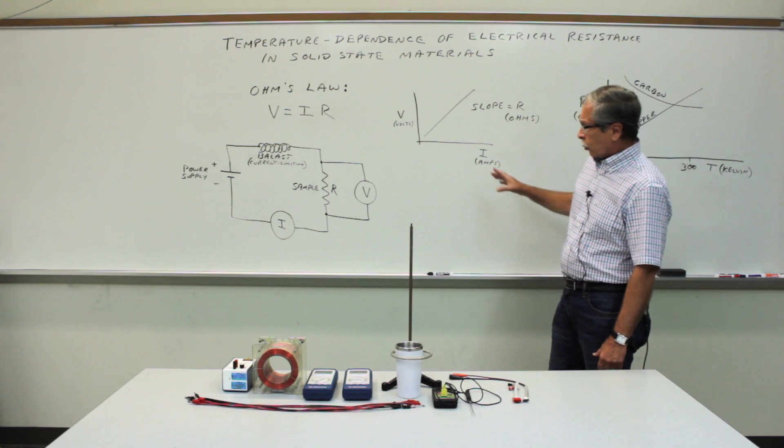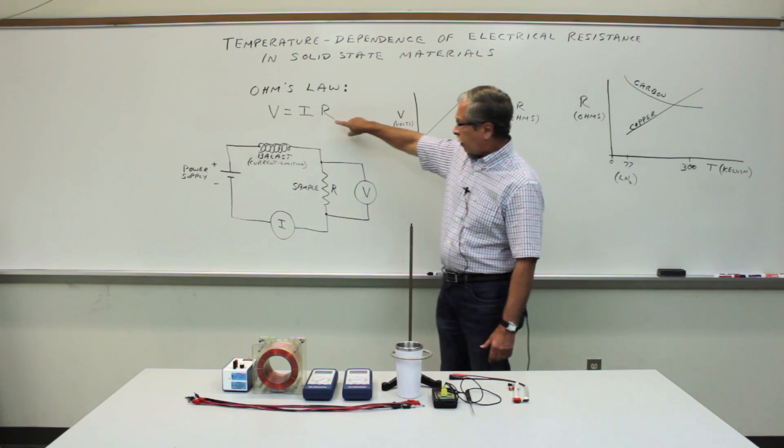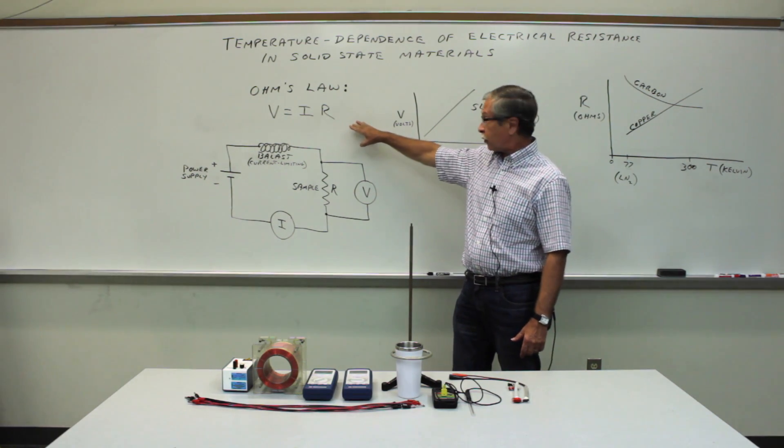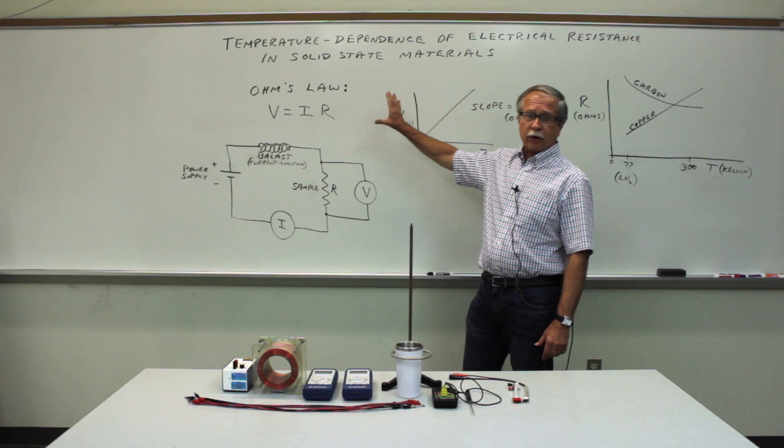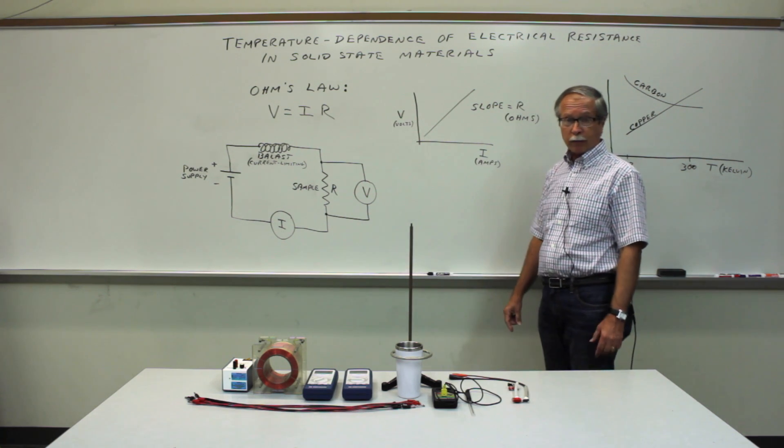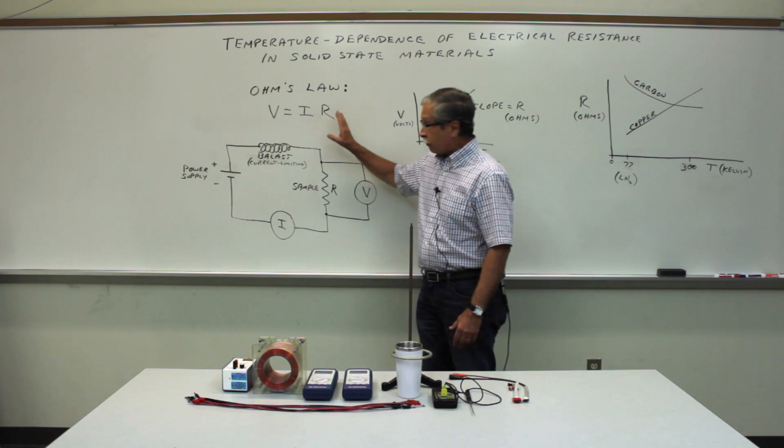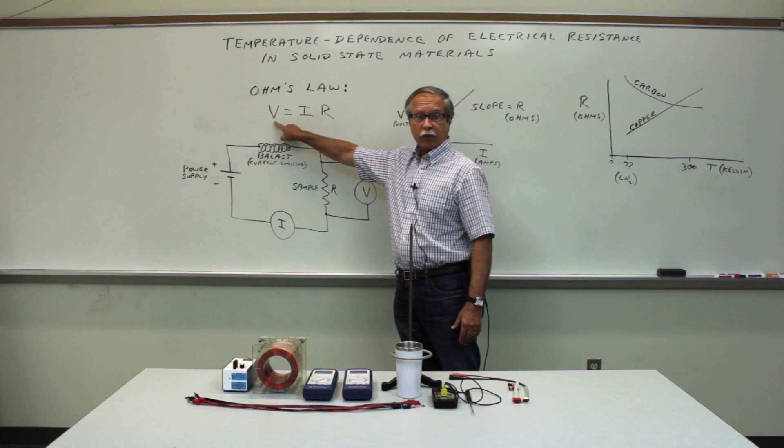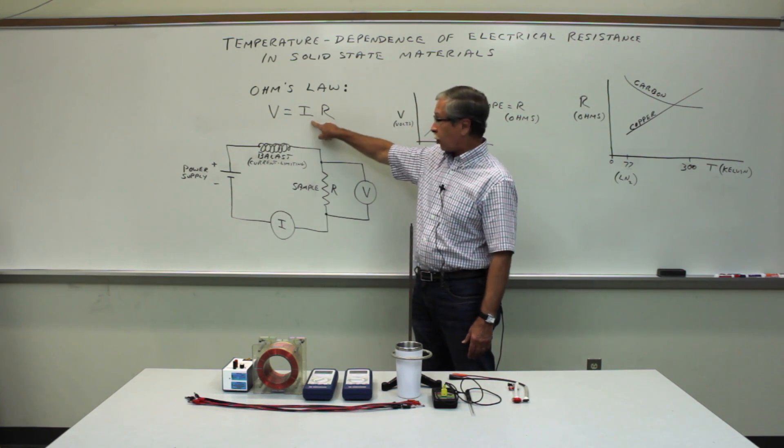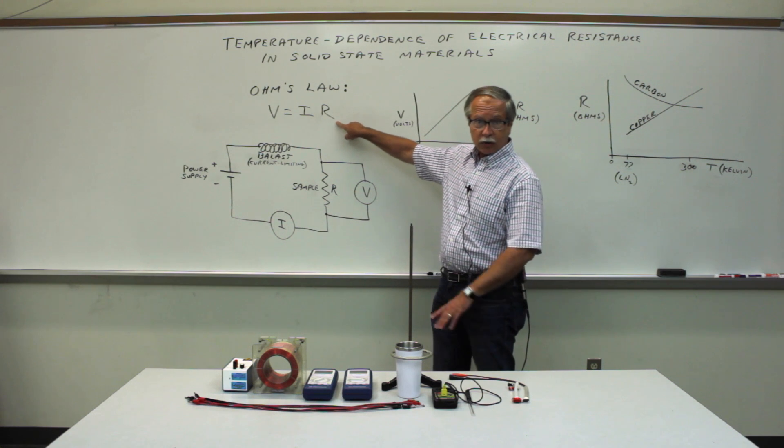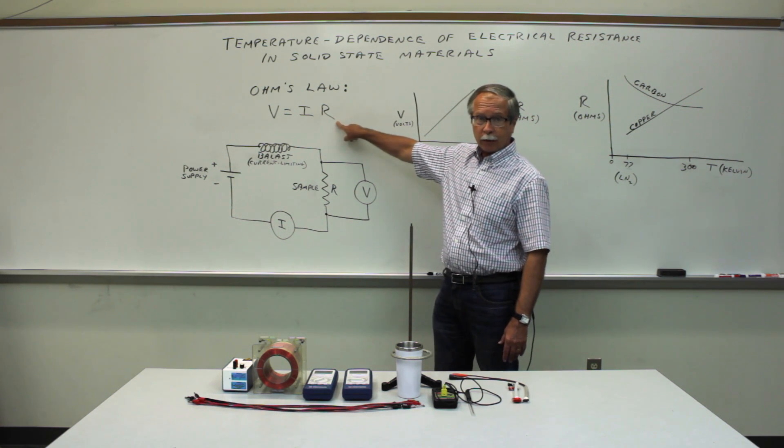We'll be working with Ohm's Law, but the way this is usually discussed in introductory physics courses completely overlooks a very important assumption - that the temperature of the sample has to remain constant. If the temperature is constant, then we can say that the voltage across the sample is equal to the current passing through it times the resistance, and the resistance is the temperature-dependent quantity that we'll be investigating.